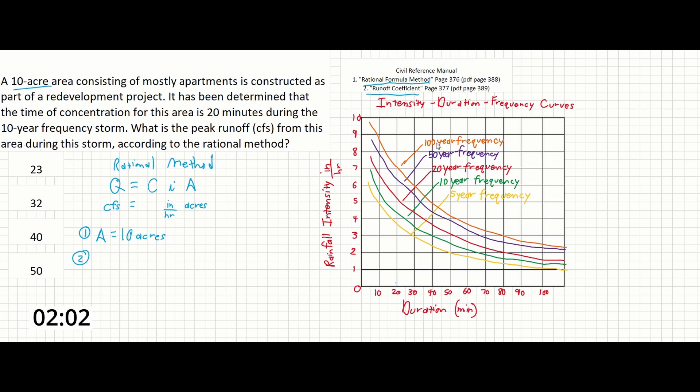The problem states that we're looking for a 10-year frequency storm during a time of concentration of 20 minutes. So what we can do is use this intensity duration frequency curve plot. We can start down at the 20-minute mark here and go up to the 10-year frequency curve. If we go up and stop here, we can see that the corresponding rainfall intensity, or I, is about 4.5 inches per hour.